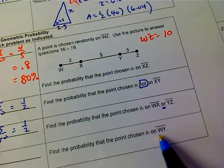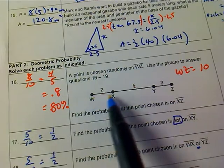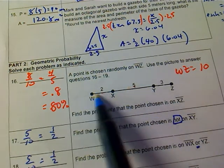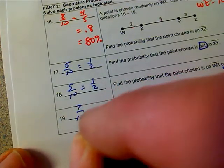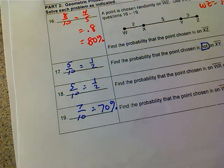What's the probability that it's on WY? What's the probability that it's somewhere on WY? Well, that's 2 and 5. That's 7 out of the 10. So 7 out of the 10. I'll write it this way this time just to be different. 70%.